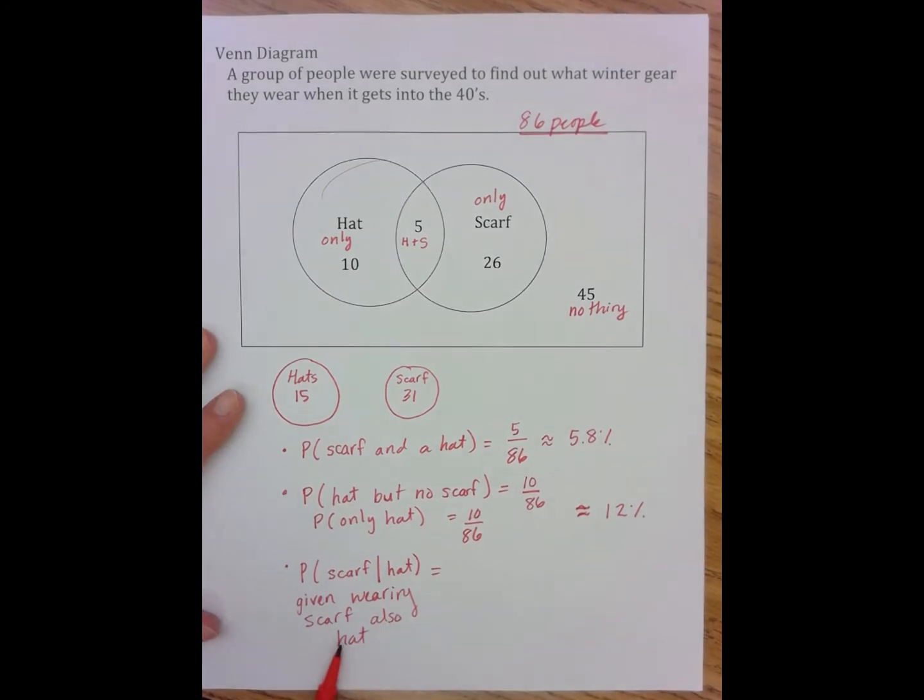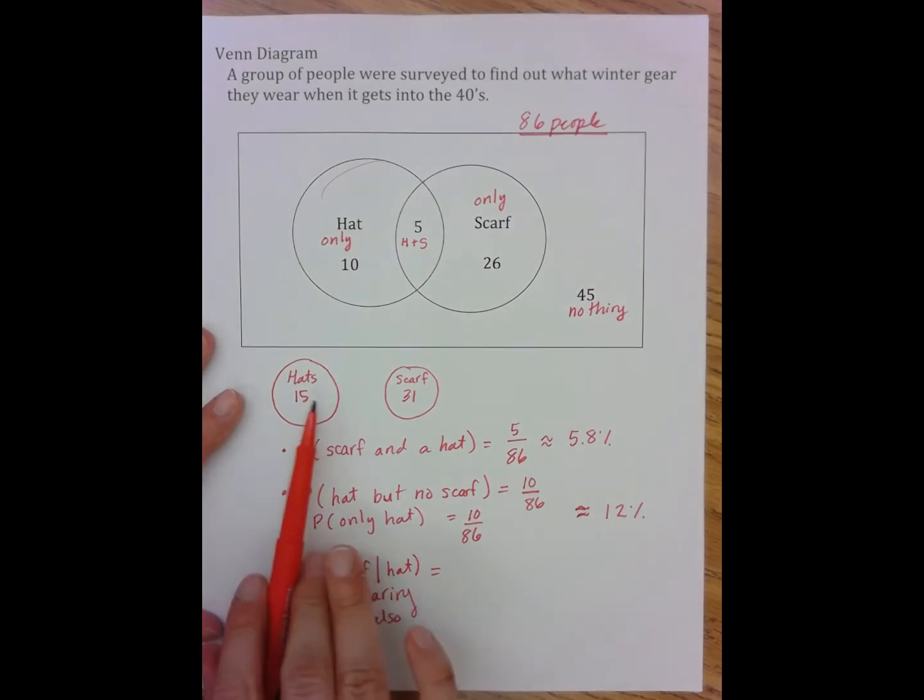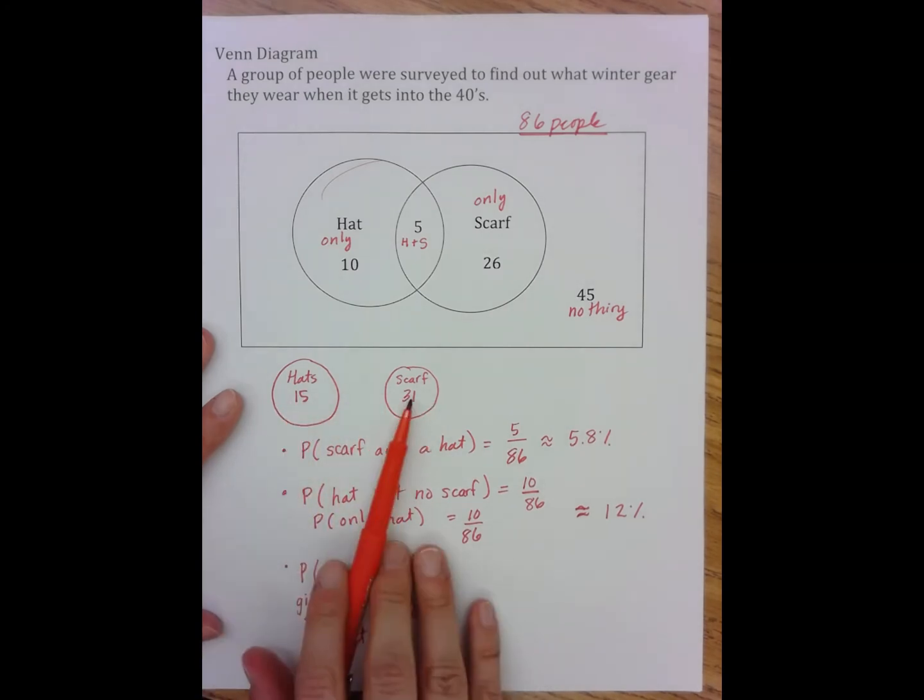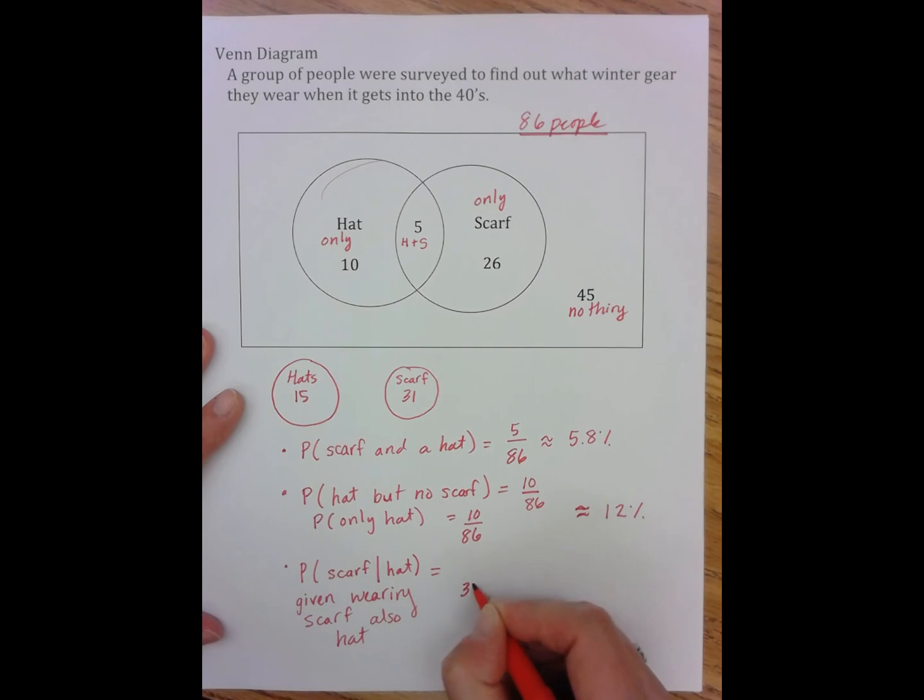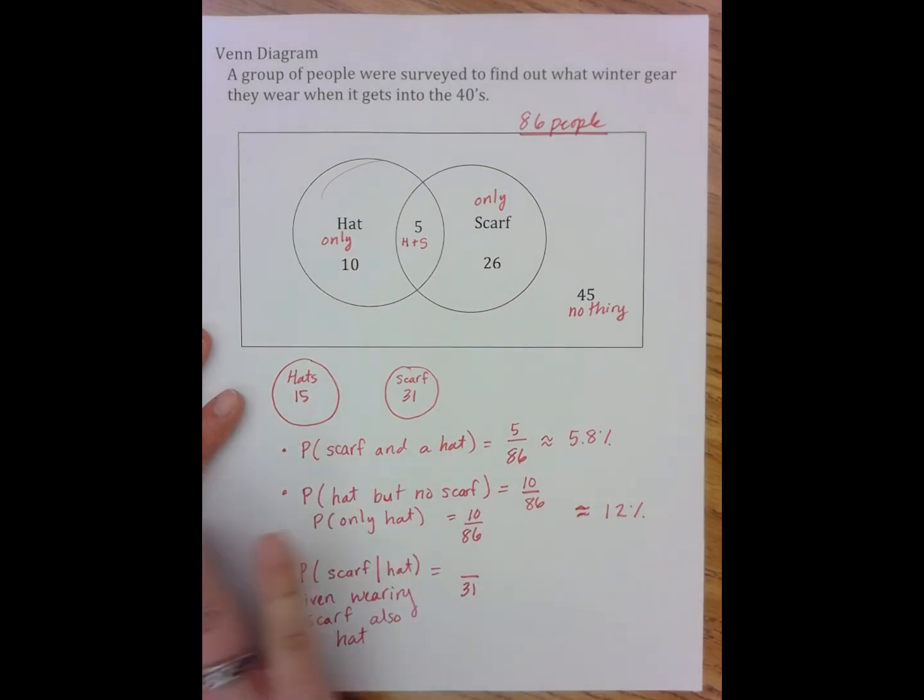So given that they're wearing a scarf, I now need to look at only the portion of the Venn diagram that deals with wearing a scarf. And so having drawn these two circles down here is pretty helpful because now I can see that I'm only talking about 31 people.